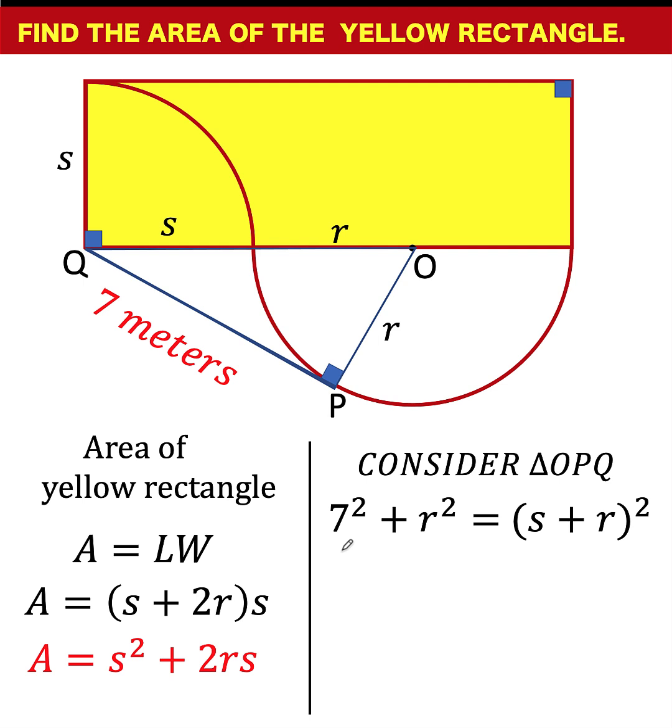Simplifying, this becomes 49 plus r squared at the left, and we expand the binomial at the right side as s squared plus 2rs plus r squared. Notice that this r squared and r squared are the same, so they can be cancelled out by subtraction. What's left is 49 equals s squared plus 2rs.